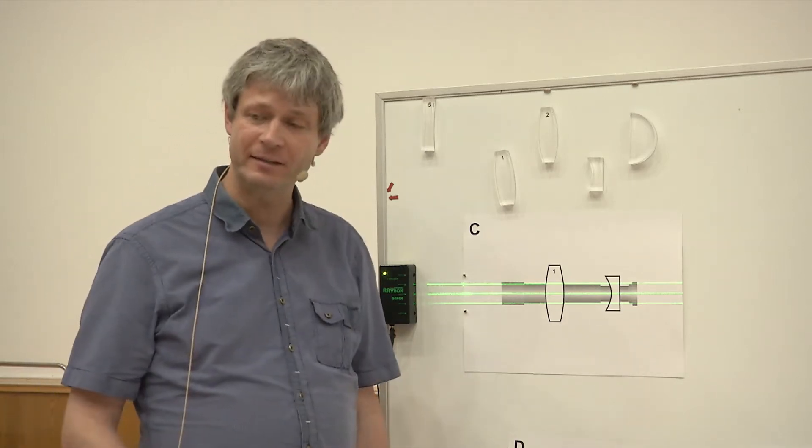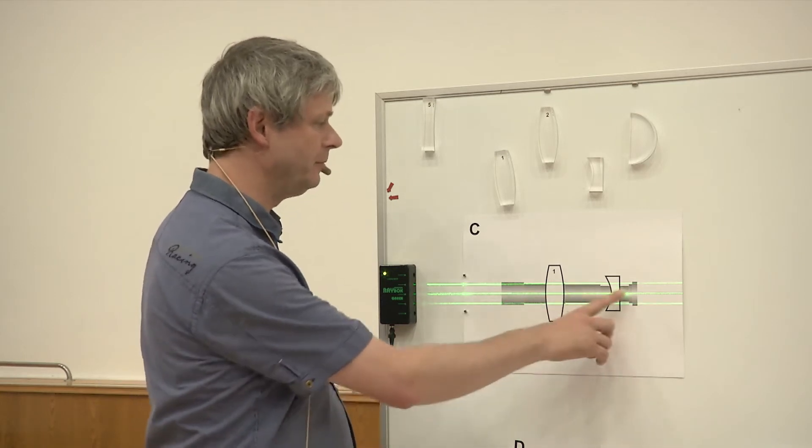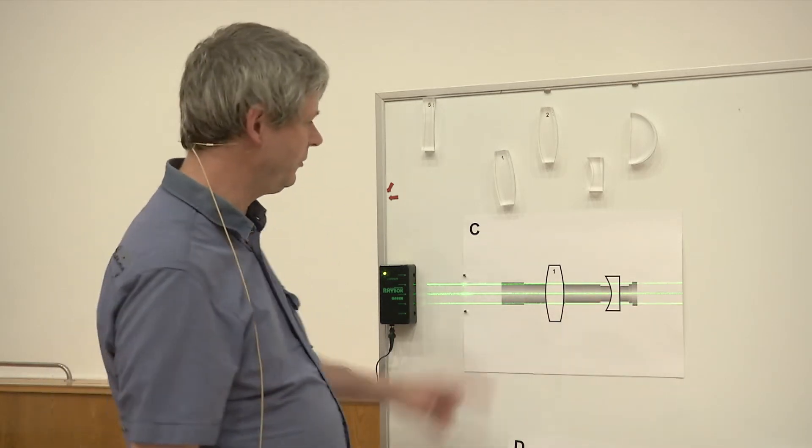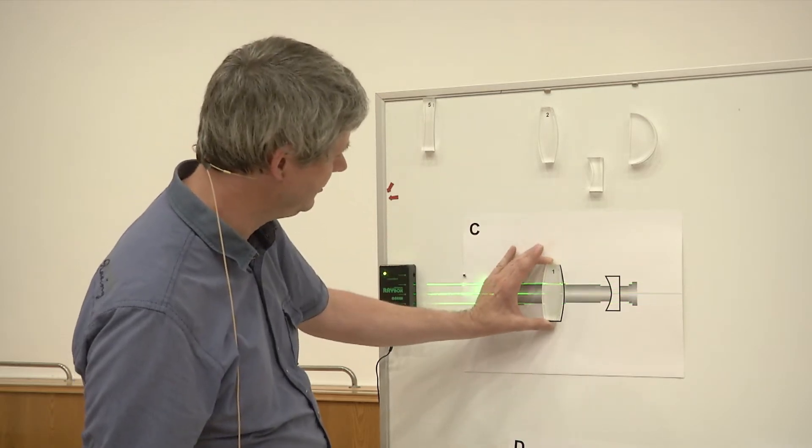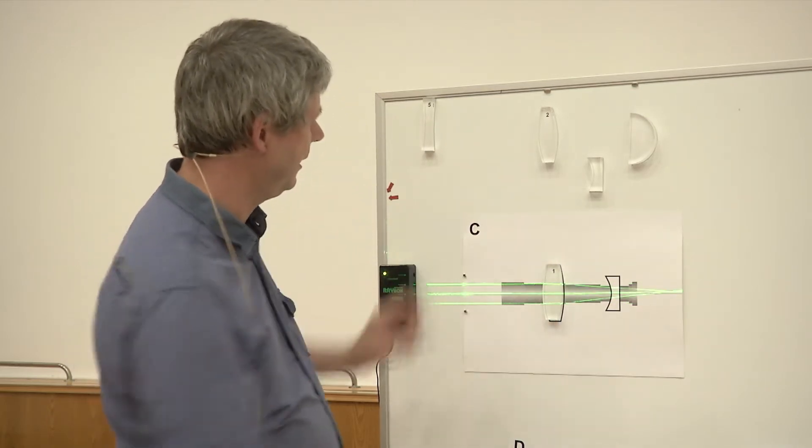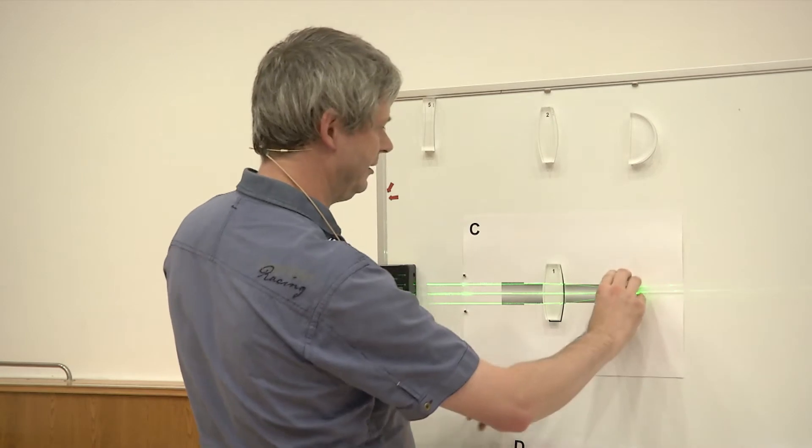As opposed to a Keplerian telescope, here we have a Galilean setup. It consists of a bi-convex lens here and a plano-concave lens here.